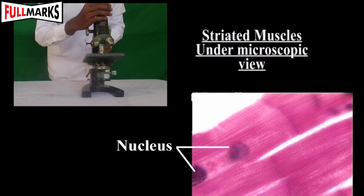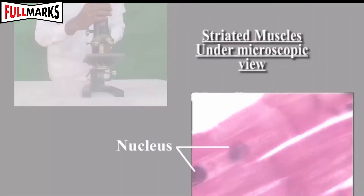Animal tissue — Striated muscles: These muscles show long cylindrical fibers. The cells are multinucleated. The muscles show alternate dark and light bands. The cells are surrounded and held together by connective tissue.